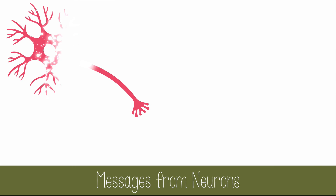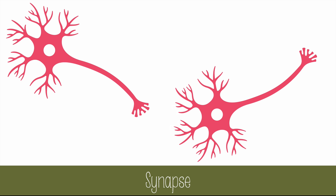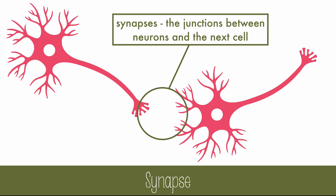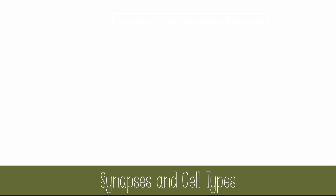A neuron transmits nerve impulses through itself, but when it's time to send a message to another cell, most neurons will send chemicals to the next neuron across a very small gap between them. The junctions between neurons and the next cell are called synapses. There are three major types of cells that neurons will form synapses with: sensory receptor cells, other neurons, and effector cells.